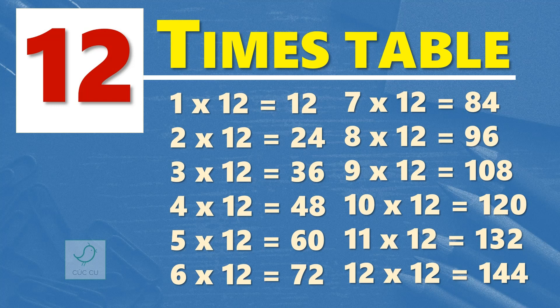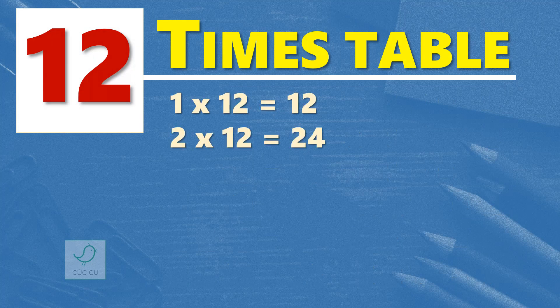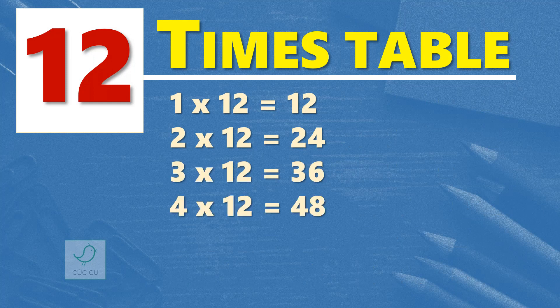Multiplication Table of 12. 12 times table. 1 times 12 is 12, 2 times 12 are 24, 3 times 12 are 36, 4 times 12 are 48.